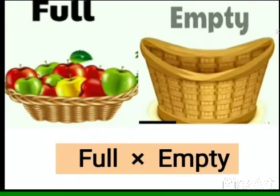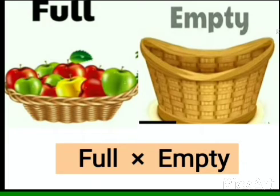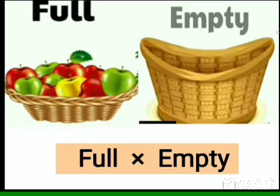This is our last picture. In this picture, a fruit basket is there, and this fruit basket is full — that means many apples are there. And in the next picture, the fruit basket is empty. Full, empty. The opposite of full is empty.